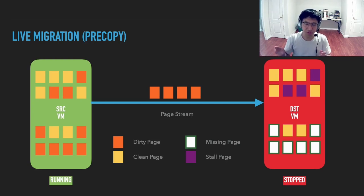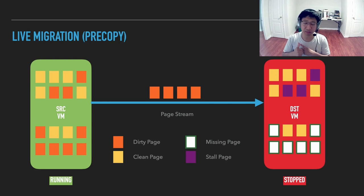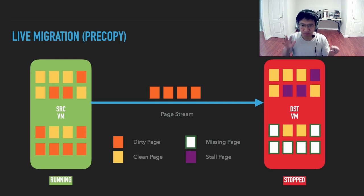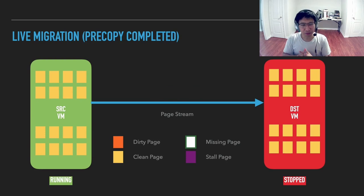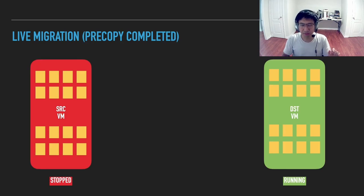On the destination, we can have quite a few kinds of pages. There can be clean pages, because they are identical to the source. There can be missing pages, which means we haven't yet migrated any version of that page. There can also be stale pages, which means we used to migrate this page but the content changed on the source — so even if migrated, it is stale and we need to update it. These pages will finally be discarded. When pre-copy completes, all pages are clean on both source and destination. We then switch the running state from source to destination and the migration is complete, after which we can safely destroy the source instance.